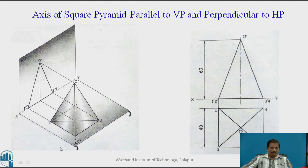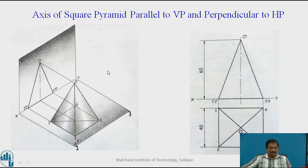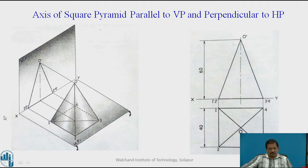Now, this is the axis of a square pyramid parallel to VP and perpendicular to HP. In this case, the position of the pyramid is such that its axis is perpendicular to HP and parallel to VP. In the square prism case, it was kept so that the corners are towards right-hand and left-hand side. But here, we observe that base edges are parallel to VP, whereas in that case they were angular to VP. These are the 4 base edges — 1 to 2, 2 to 3, 3 to 4 — out of which 2 are parallel to VP or parallel to the XY line and 2 are perpendicular to VP.